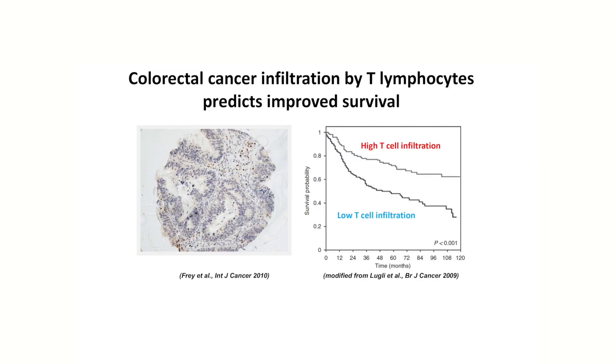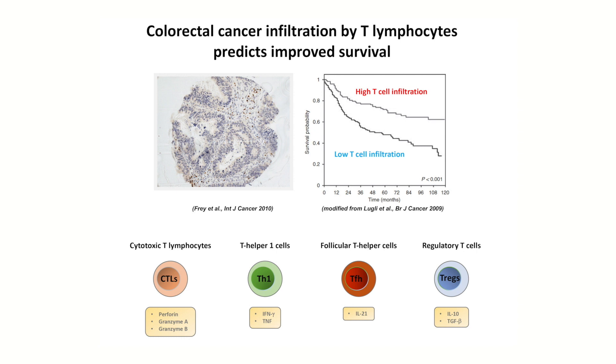Human colorectal cancer is among the most frequent tumor types and is a leading cause of cancer-related death worldwide. Infiltration of tumor tissue by T lymphocytes has been recognized to predict improved prognosis irrespectively of tumor stage as defined by conventional staging systems. In particular, the presence of high numbers of cytotoxic T lymphocytes, T helper type 1 cells, follicular T helper cells, and surprisingly regulatory T cells is associated with prolonged patient survival. Mechanisms underlying the recruitment of lymphocytes into tumor tissue and their beneficial effects remain to be clarified.